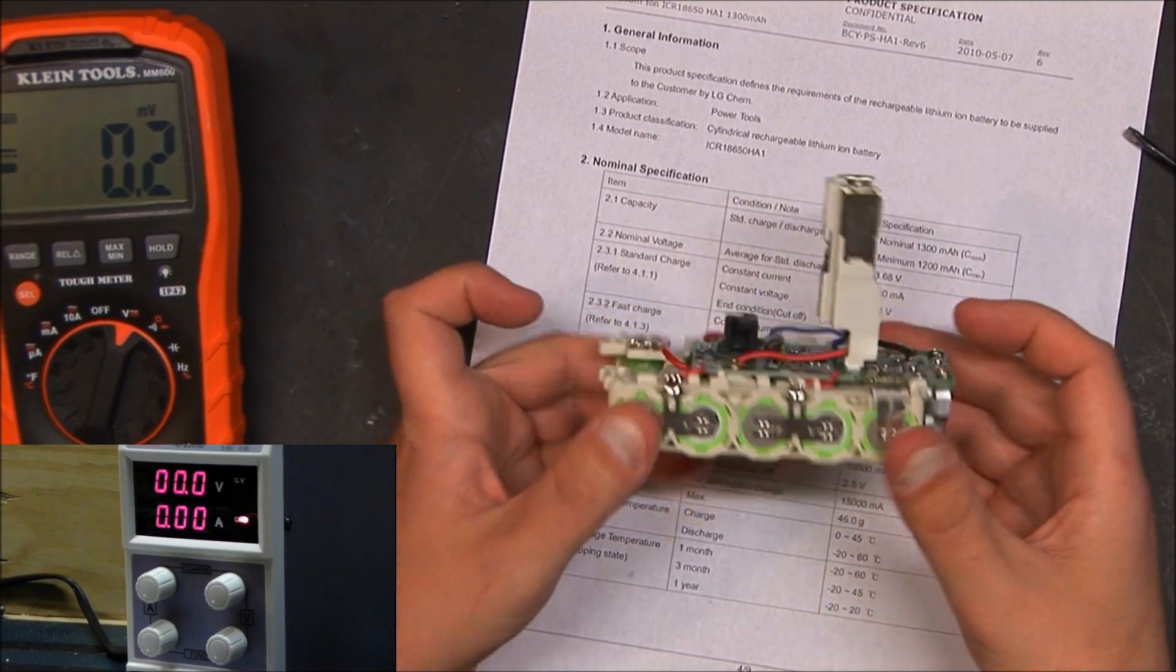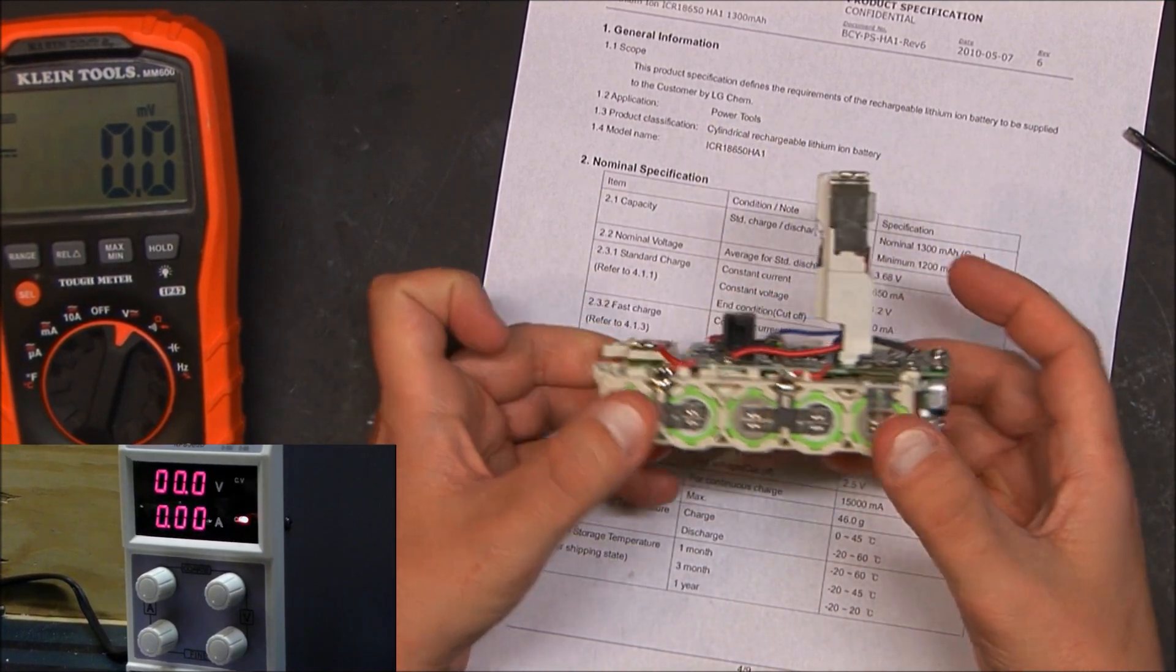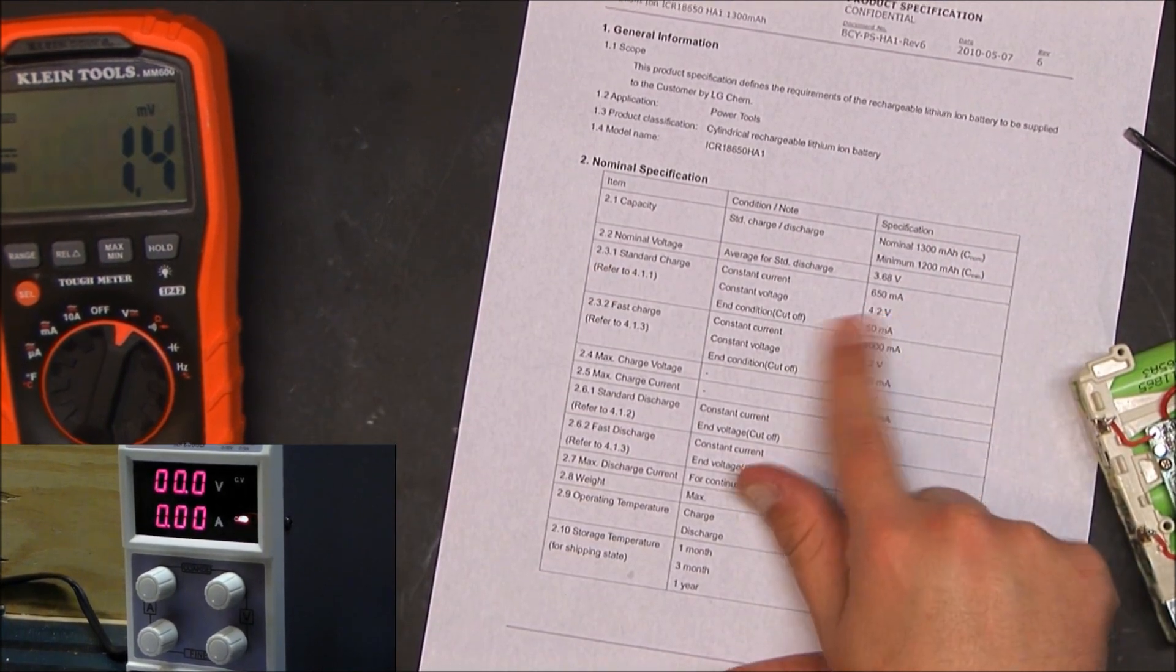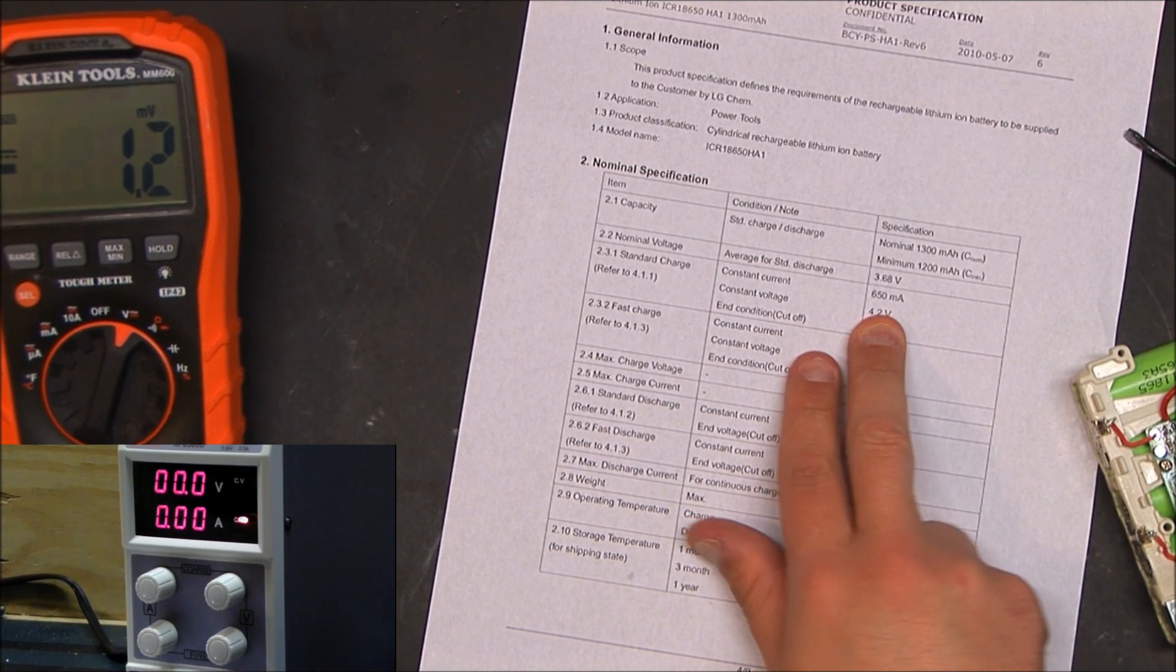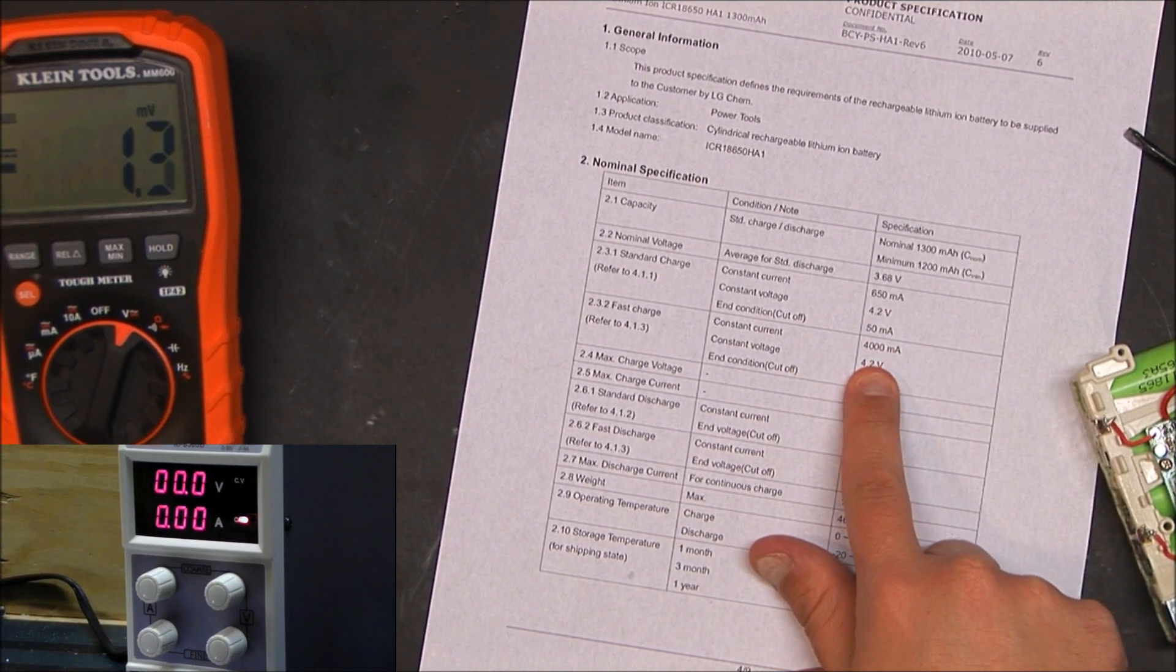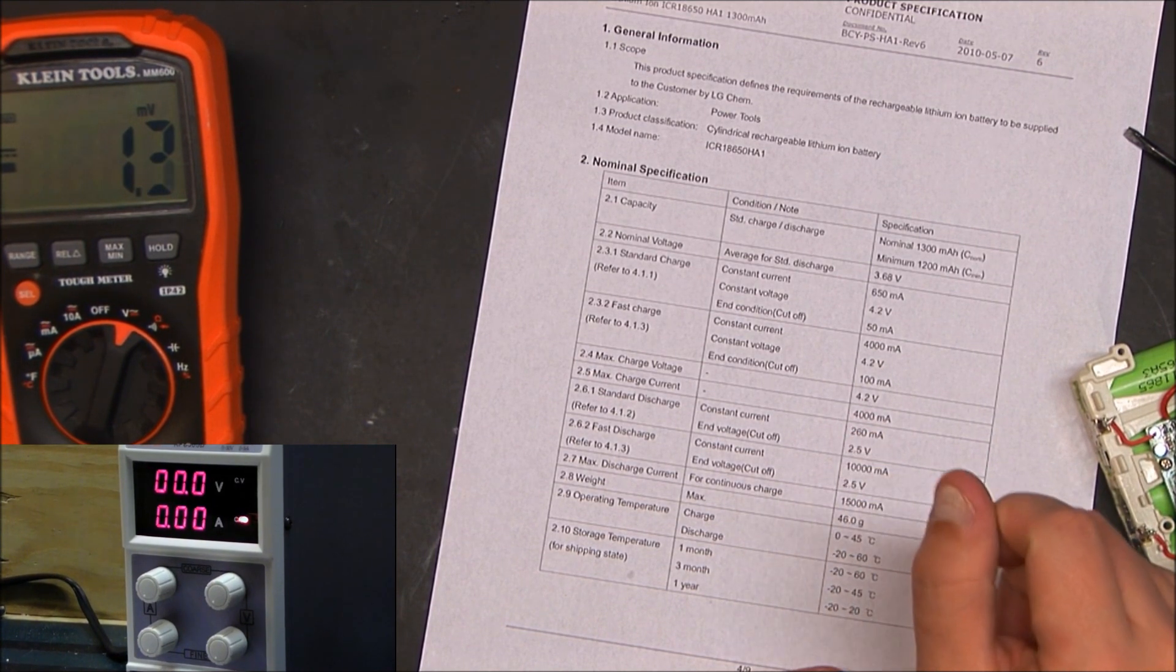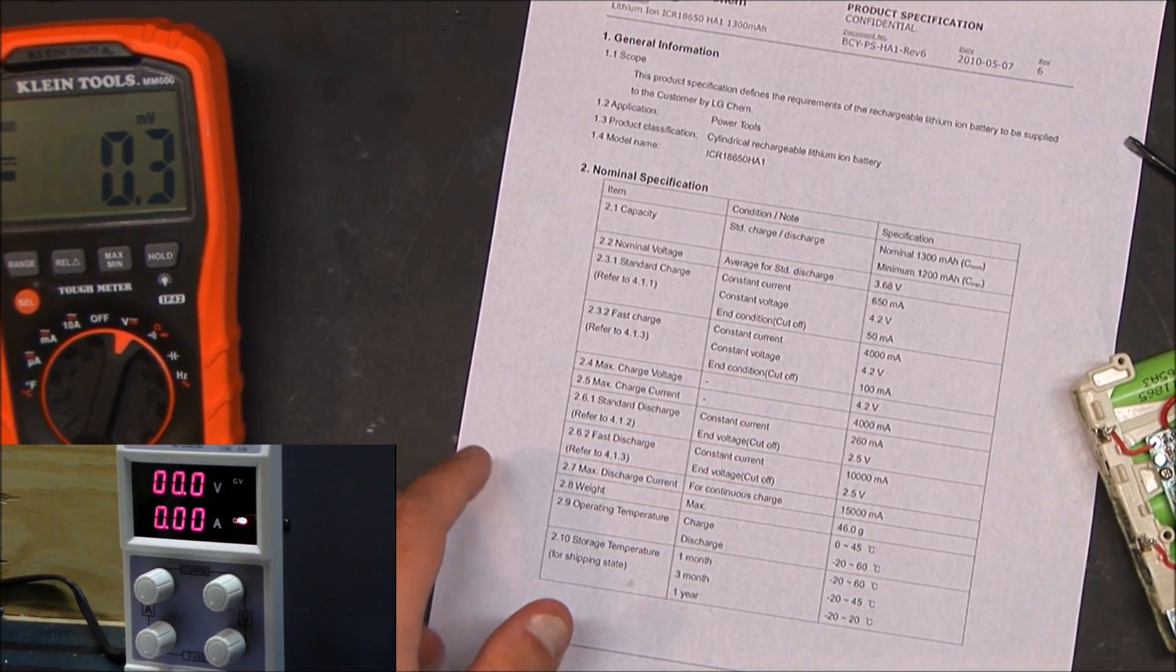To bring this battery pack back to life, we're going to have to charge each of these cells individually. They have to be charged up to 4.2 volts. I have the data sheet here. They can be charged as low as 650 milliamps or as high as 4 amps at 4.2 volts. The nominal charge is 3.68, which is when you're applying the maximum load to it.